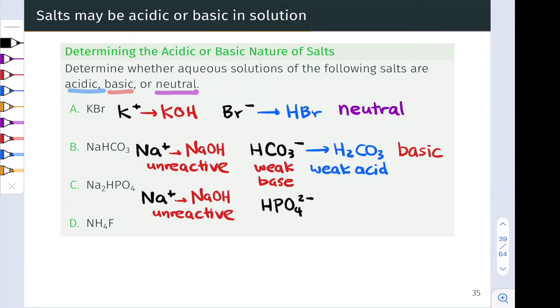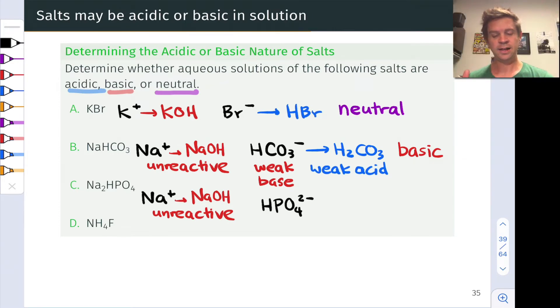Something we glossed over in B is that HCO3 minus actually has the capacity to act as an acid as well. It could give up a proton and make carbonate, CO3 2 minus. Here we have HPO4 2 minus, which has the capacity to lose a proton as well to make PO4 3 minus, the phosphate anion. This could also add a proton acting as a base to make H2PO4 minus. So let's write out actually both of those possibilities.